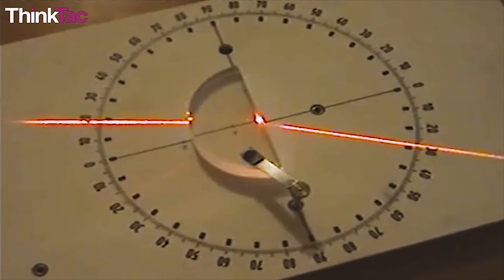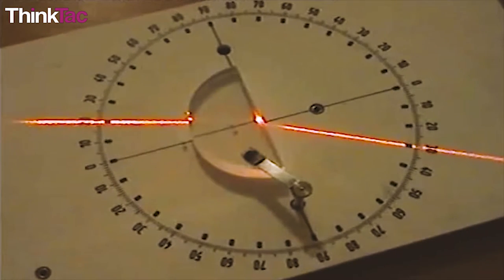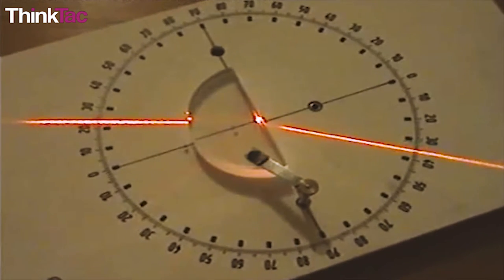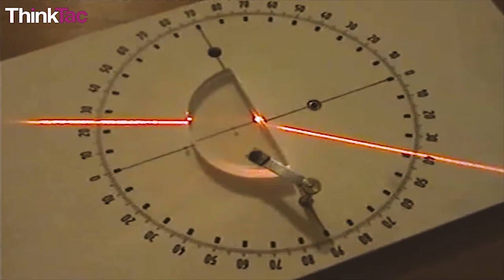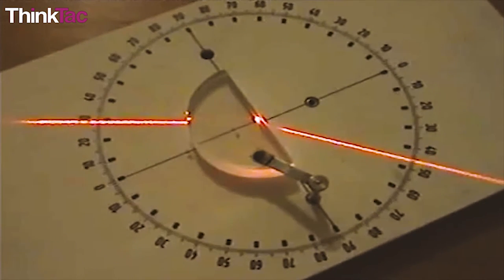When the ray is incident at an angle higher than the previous angle but less than the critical angle, the ray of light is refracted at a higher angle into the second medium and more of it is reflected back.